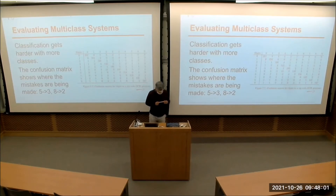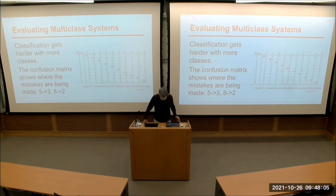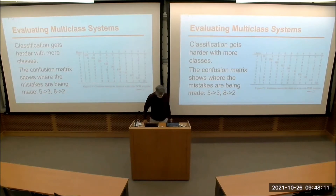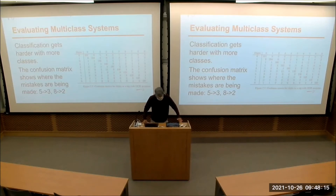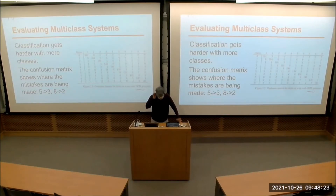One thing to note: when you're classifying things into more categories, classification becomes a harder problem. When you have two categories, a monkey can get 50% accuracy by randomly guessing. When you have 10 categories, the monkey can only get 10% accuracy by randomly guessing.